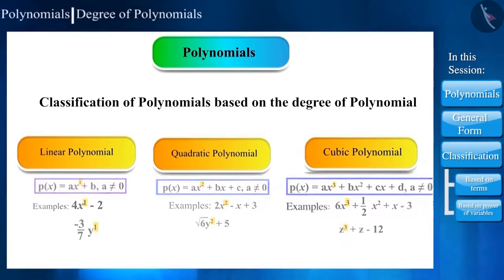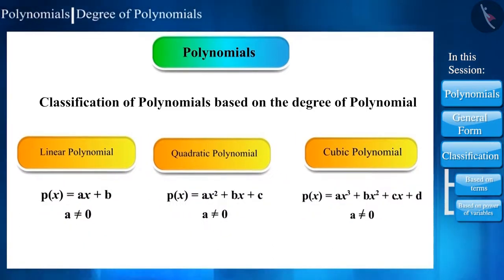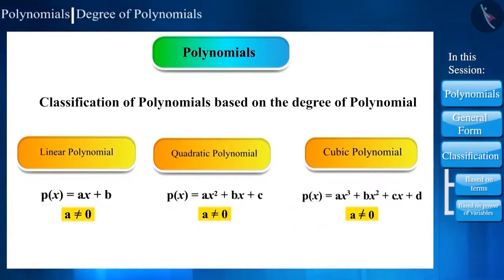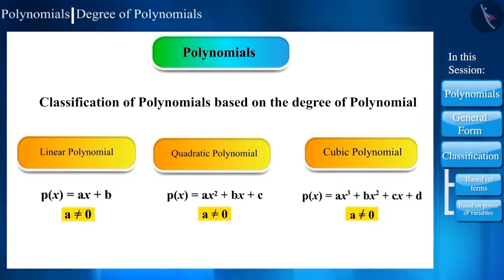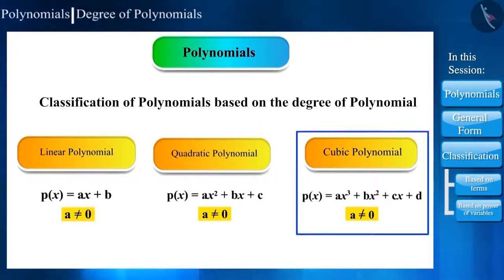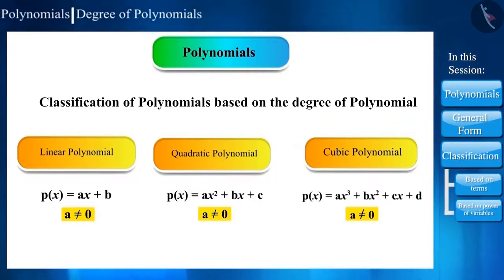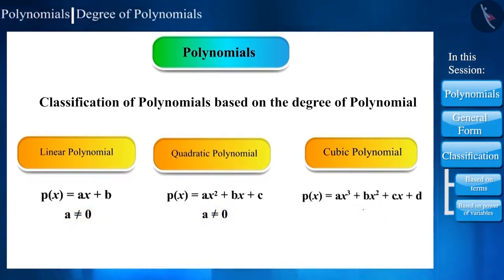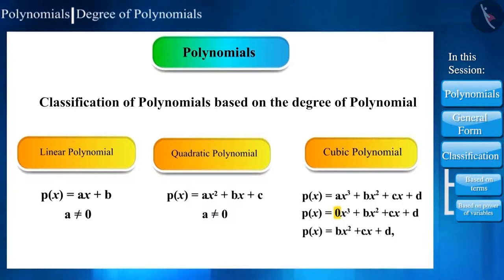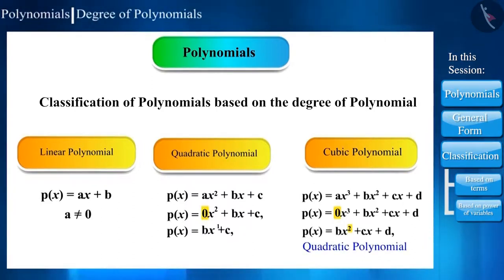If you observe the general form of these polynomials, it states that 'a' should not be 0. If a becomes 0, the degree of the polynomial reduces by 1. For example, in the general form of a cubic polynomial, putting 0 in place of 'a' reduces its degree by 1 making it quadratic. Similarly, quadratic becomes linear, and linear becomes a constant polynomial.